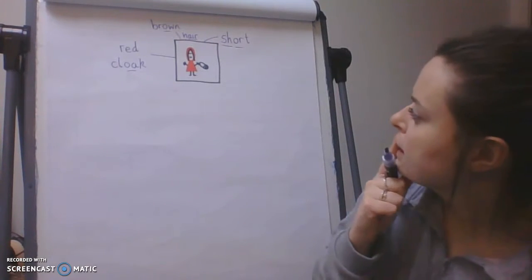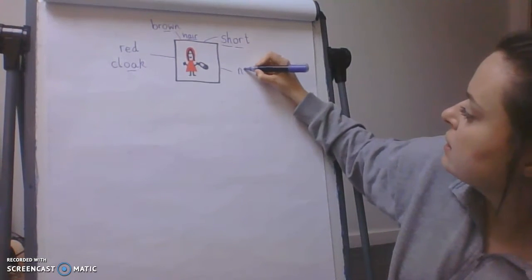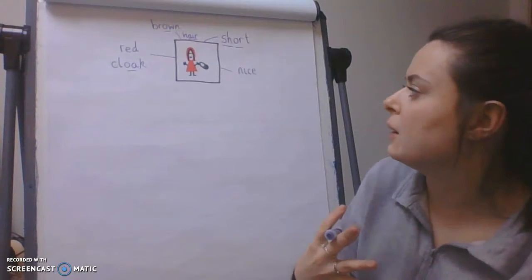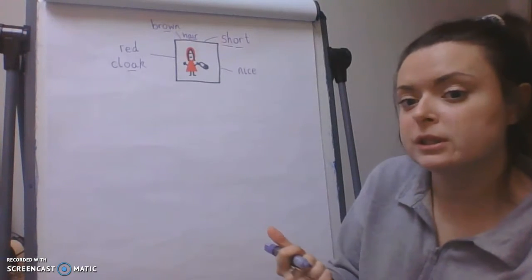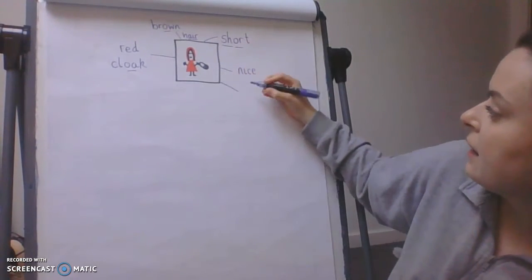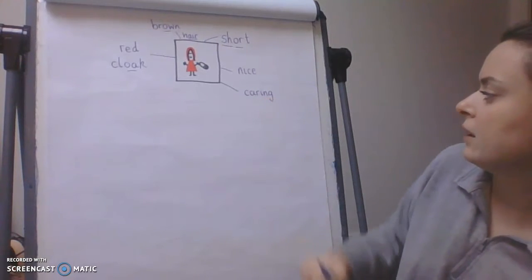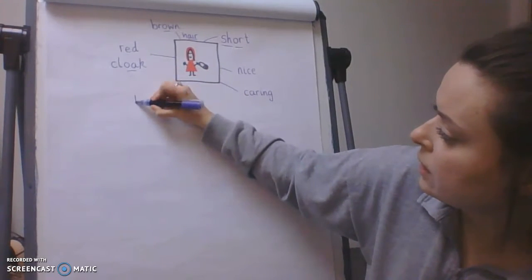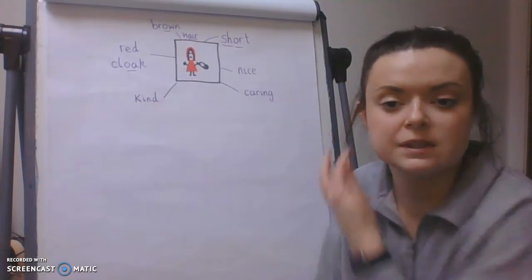What else? She has a nice smile. I'm going to write "nice" — n, i, c, e. That's a tricky word to spell, nice. Now I'm going to describe how Little Red Riding Hood is as a person. I know she's caring because she is delivering some goodies for her grandma who is poorly. So I'm going to write "caring" — c, a, r, i, n, g. I think Little Red Riding Hood is kind — k, i, n, d. I think I've done enough adjectives there to describe Little Red Riding Hood.